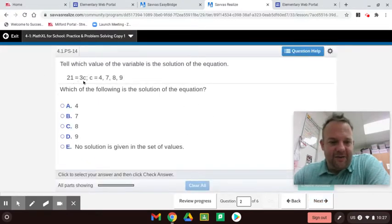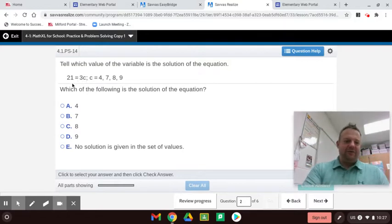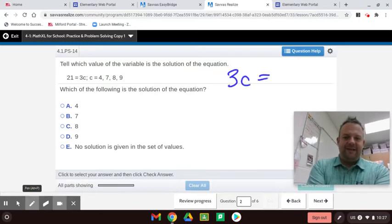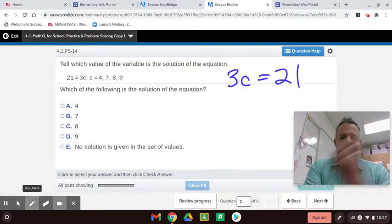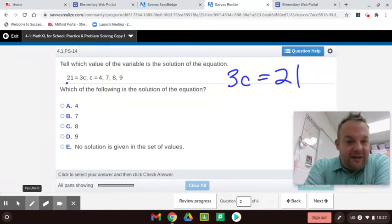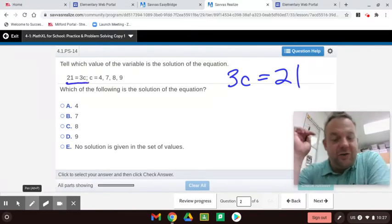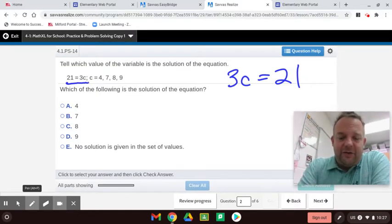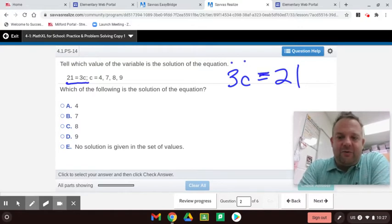See this right here? 3 times C equals 21. I usually write it like this: 3C equals 21. See how it's on the left side? But this is a great example, because it shows you that you can have it on the right side, too. Either way. Now, the 3 here is called the coefficient. The C is the variable. And we're saying it's equal. This means times, 3 times C.